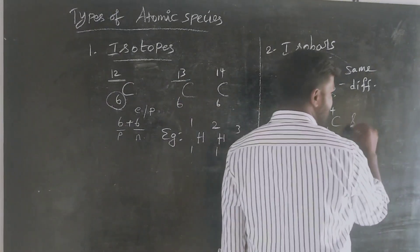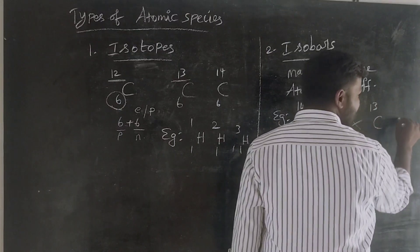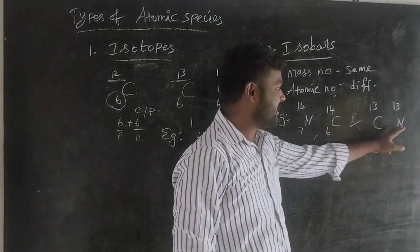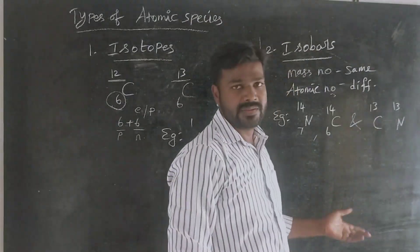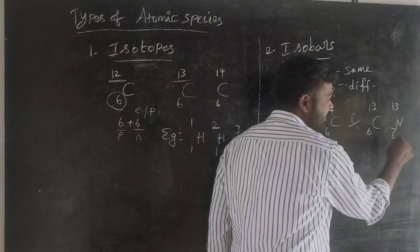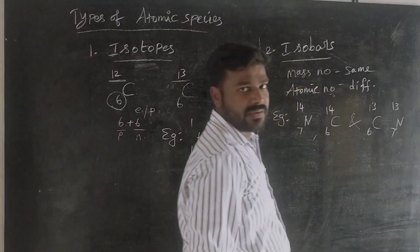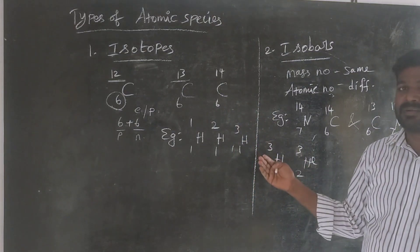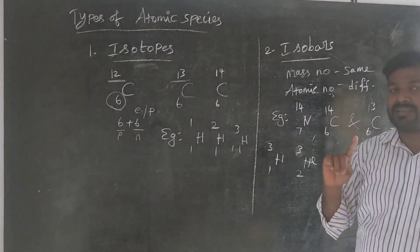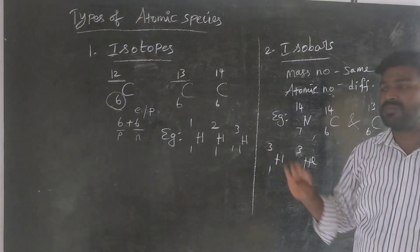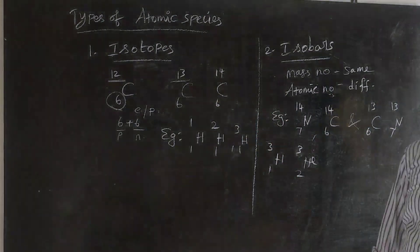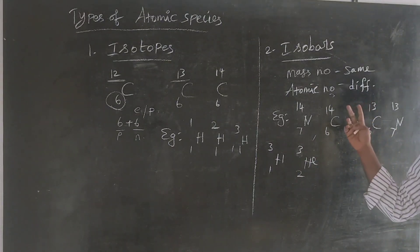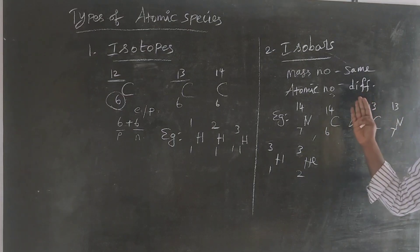For example, C-13 and N-13 are isobars: atomic number 6 for carbon and 7 for nitrogen, but both have mass number 13. So isotopes have the same atomic number with different mass numbers, while isobars are different atoms with the same mass number.